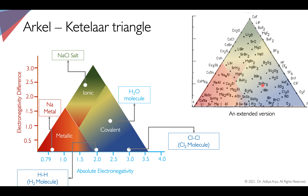As a take-home message: there is absolutely nothing like a pure ionic bond, pure covalent bond, or pure metallic bond. There is always a slight degree of another kind of bond present. There is no perfect boundary between these three kinds of bonding. Rather, there is a gradient from ionic to covalent, covalent to metallic, and metallic to ionic, and this gradient can be explained with the help of the electronegativity difference between the atoms. Thank you very much.